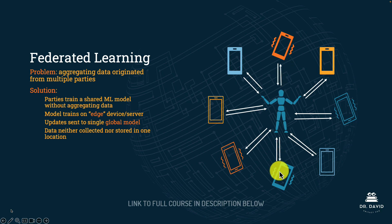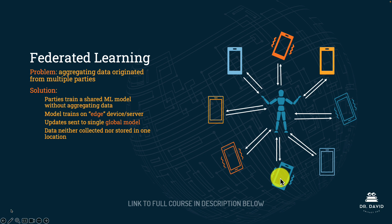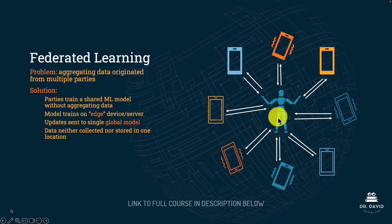The model goes to the device, trains on the device, and then sends that learning back to the global model, which then updates. There is no private data moving from the end user — whether a smartphone, PC, laptop, or server — there is no private data being aggregated in one single place. Instead, the model is trained on that device, its updated weights are sent to the global model, and the global model reflects the updates from each of the devices it trains on. So data is neither collected nor stored in one location.